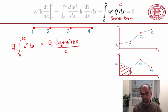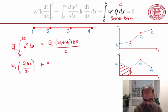And I can split this into the part that depends on w1 and w2. So the part that depends on w1 is going to be q delta x over 2. And the part that depends on w2 is going to also be q delta x over 2.